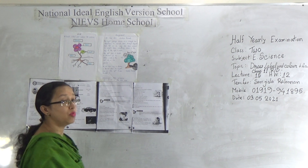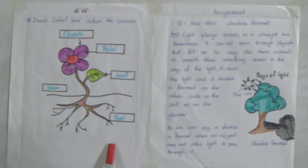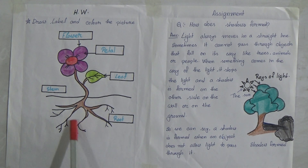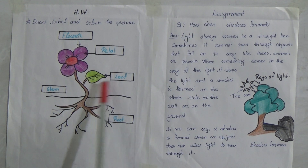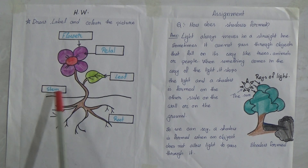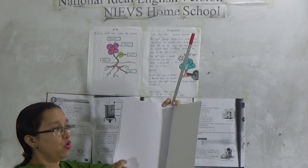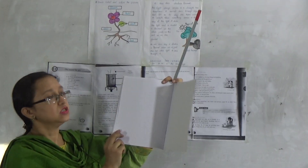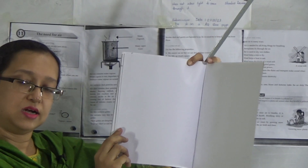At first we will discuss the homework. Your homework after the Eid vacation will be to draw, label and color a picture. Here I have drawn a picture of a flower tree, and I have mentioned the different parts of the plant — the petal, the leaf, the root and the stem. You will draw this picture in your homework copy on the white page, with the date, homework number, and then label and color the picture.